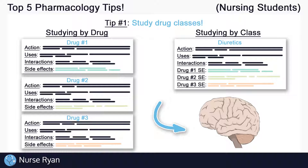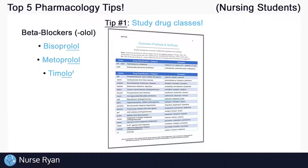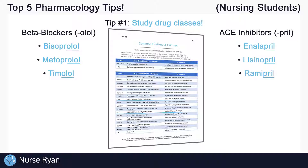Just as a side tip, lots of drug classes end with the same suffix, which also makes it easier to study by drug class. Beta blockers usually end with -olol, like bisoprolol, metoprolol, and timolol. ACE inhibitors usually end with -pril, like enalapril, lisinopril, ramipril, and so on.